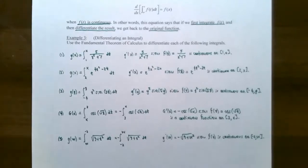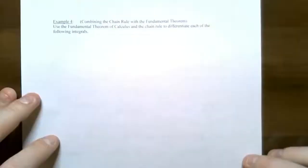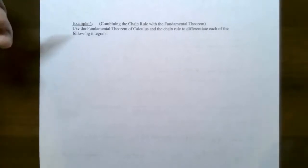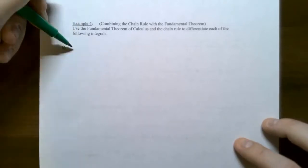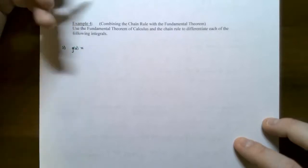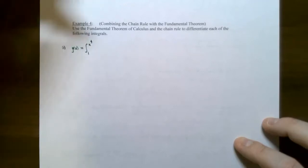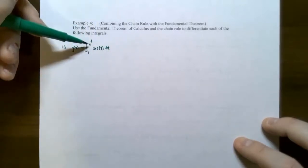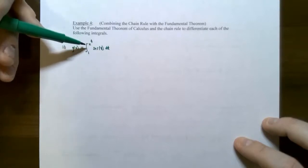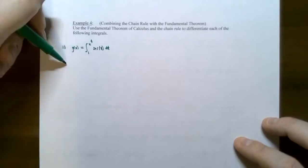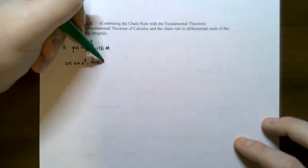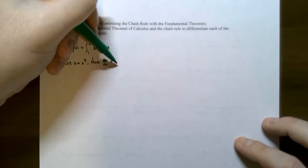This gives you an idea of how the first part of the Fundamental Theorem of Calculus works. Now we'll use both the Fundamental Theorem and the chain rule to differentiate integrals where the limit of integration is itself a function of x. In problem one, g of x is the integral from one to x to the fourth power of secant of t, dt. The upper limit is x to the fourth, not just x, so we let u equal x to the fourth, and du dx equals four x cubed — this is where the chain rule comes in.